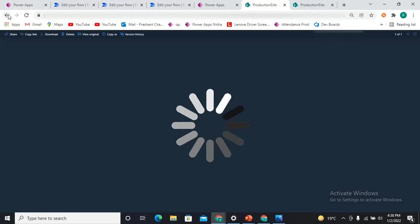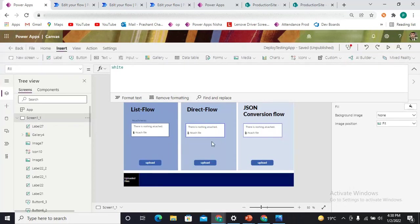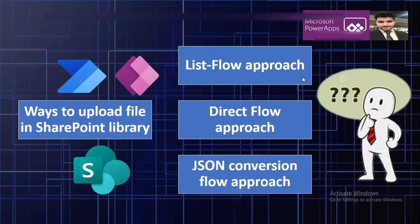After uploading, you can see we get the loader file stored correctly in the library. So those are the three approaches to store a file into any document library. For this example we used SharePoint, but you can use OneDrive as well, because the approach uses a flow — and once you have the file content in the flow, you can store it anywhere: OneDrive, SharePoint, any other database, or any document library.